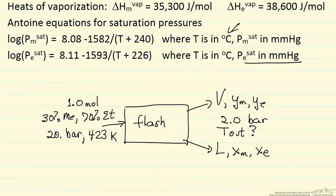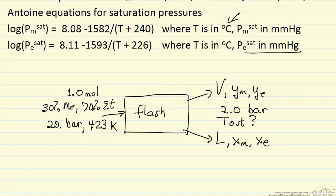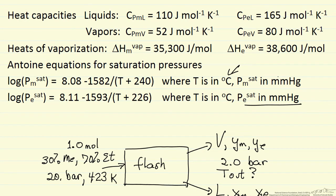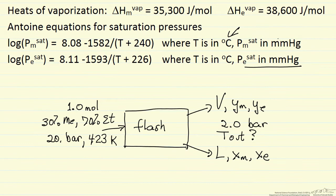Let's look at what the diagram represents. We're feeding methanol and ethanol — an ideal solution, as these are very similar molecules. We're going to assume constant heat capacities with the values given, and we'll assume the heats of vaporization are evaluated at 300 Kelvin. We're going to use 300 Kelvin as our reference temperature, which is an arbitrary but convenient value.